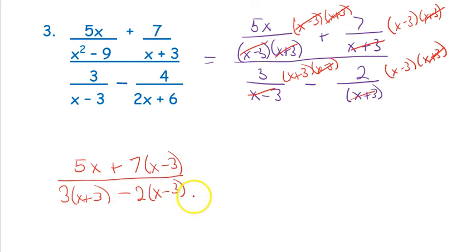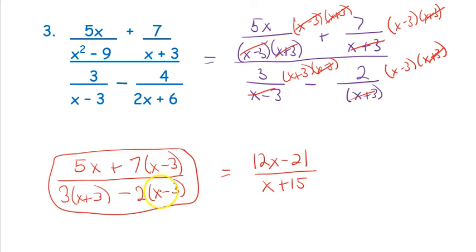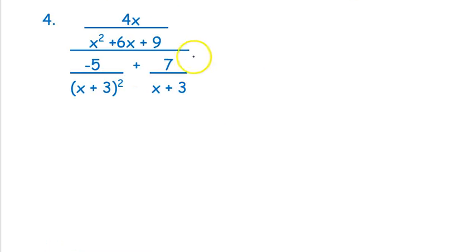You could distribute the 7, the 2, and the 3 in and combine like terms — you'd get 12x − 21 over x + 15. But for today, you can just stop at the unfactored step, because at that point I can tell what you multiplied by and how you got there, making it easier for me to check. I'd hope everyone can distribute and combine like terms, so this is the step I really want to see.